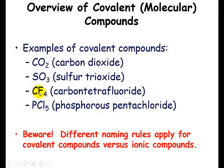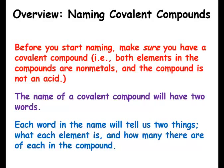Here's another one: carbon tetrafluoride, and also phosphorus pentachloride. Now I'm going to introduce some prefixes we're going to use to tell people how many of each type of atom is in the compound. You cannot use these prefixes for ionic compounds — we are learning a different naming scheme for covalent compounds and should not apply it to ionic compounds. First, make sure you have a covalent compound — both elements are nonmetals and it's not an acid. If it doesn't fit, you need different naming rules.